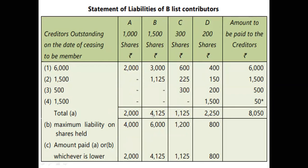If the total liability is 4125, maximum 6000, then we can get the total liability. The total liability is 4125. The C category is 1125, maximum 1200, and then 1125. If you can make D, you can mark the answer to the question. The liability is 2250.